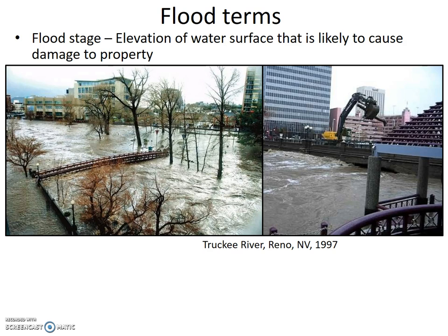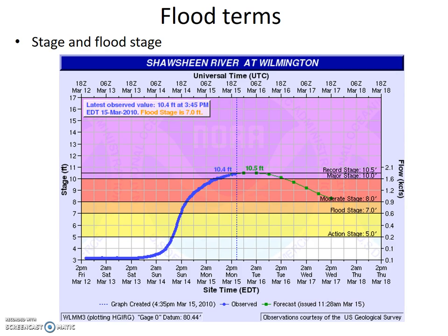Here is a hydrograph with stage and flood stage shown. The bottom axis is time, the left y-axis is stage in feet, and the right y-axis shows equivalent flow or discharge in kilo cubic feet per second (thousands of cubic feet per second). This is for the Shawsheen River at Wilmington, Massachusetts. Looking at the stage: the river is usually about three feet high. Action stage is at five feet, when flood warnings can be issued.